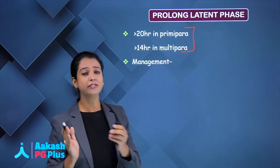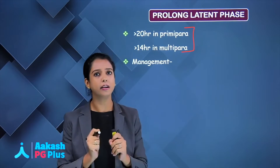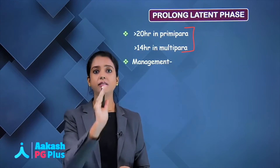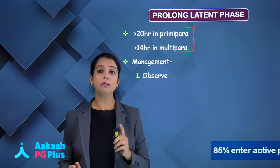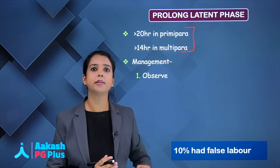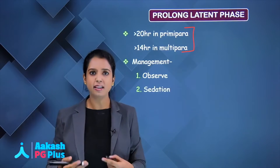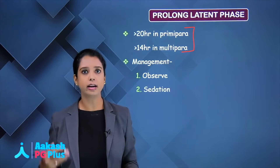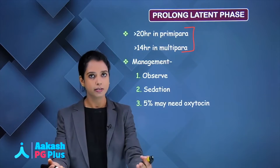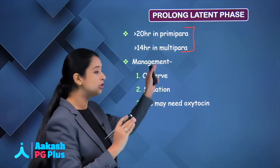How to manage prolonged latent phase? The latent phase is when the birth canal is preparing for pushing the baby out. Even if prolonged, let it prepare. So, first treatment is to observe — 85% of women will enter active phase themselves, and in 10%, the pain will subside, meaning they had false labour. If patient has pain and is really bothered, sedate the patient. Only in 5% might you need oxytocin.